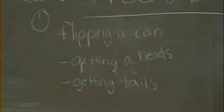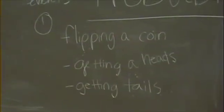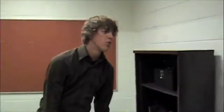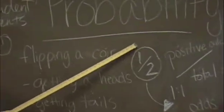There are two sides on a coin: heads and tails. To figure out the probability of getting a heads, first you have to figure out the positive outcomes over your total outcomes, which in this case is 1 over 2.